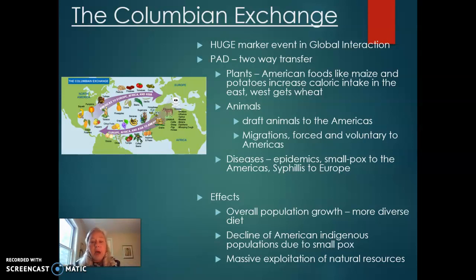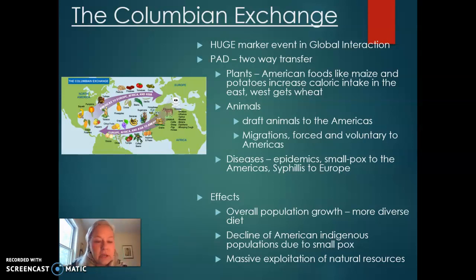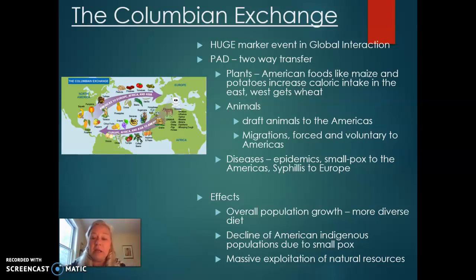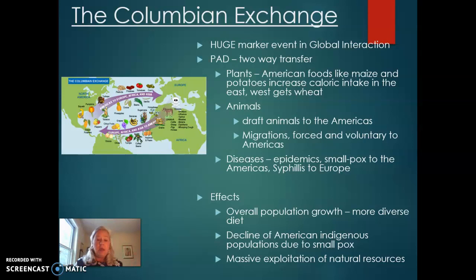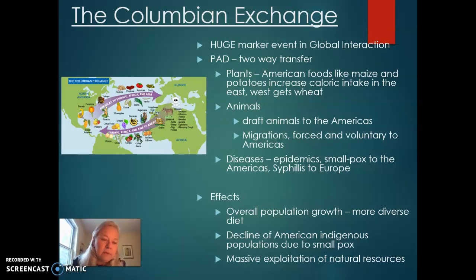Diseases: epidemics like smallpox came to the Americas and decimated the indigenous population, who had absolutely no immunity. This is something like the coronavirus in our current-day pandemic; however, smallpox was much more deadly, with a much higher fatality rate. Interestingly, syphilis was something that went to Europe, and it causes insanity — it causes people to go crazy. Mozart, it's believed, suffered from syphilis, which contributed to some of his erratic behavior.